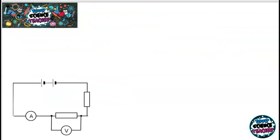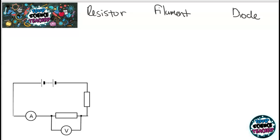Next we have the practical looking at component characteristics. In this practical we investigate three different components: a resistor, a filament bulb, and a diode. You want to investigate the current and voltage going through each component, then draw a graph showing how voltage and current vary. You can change the voltage and current by adjusting the voltage on a power pack, or by using a variable resistor in your circuit.